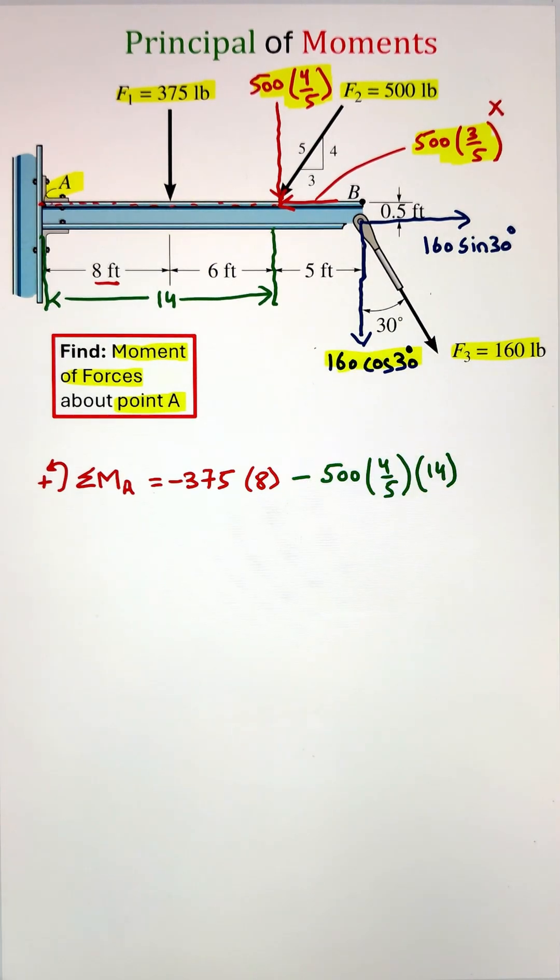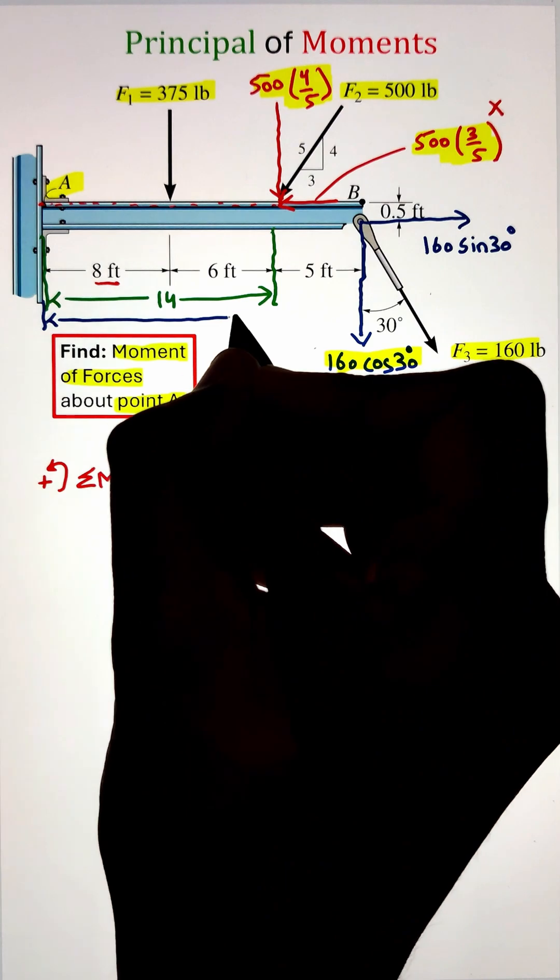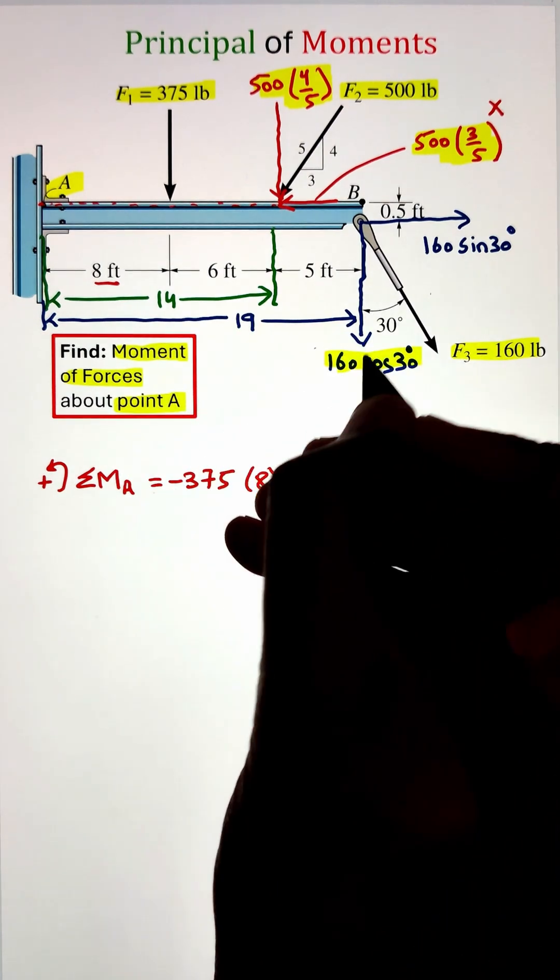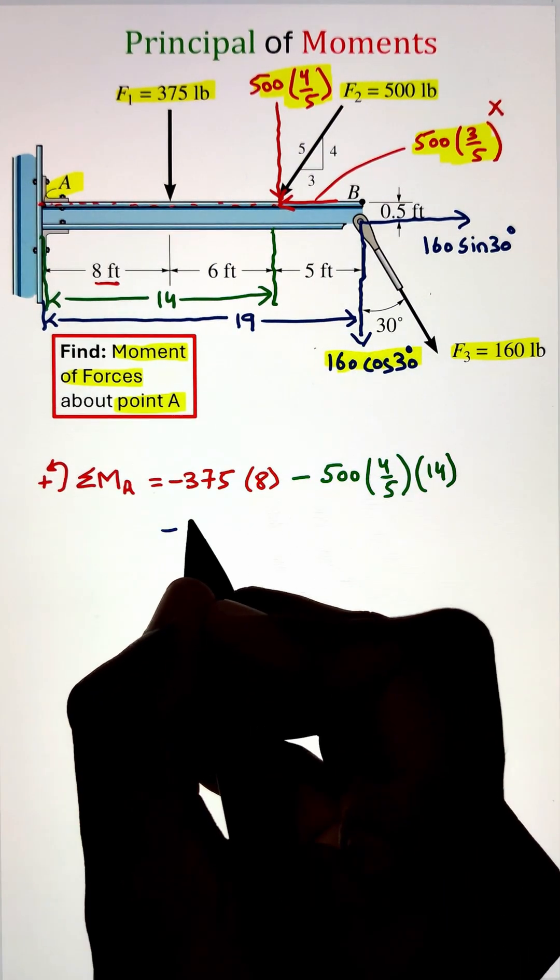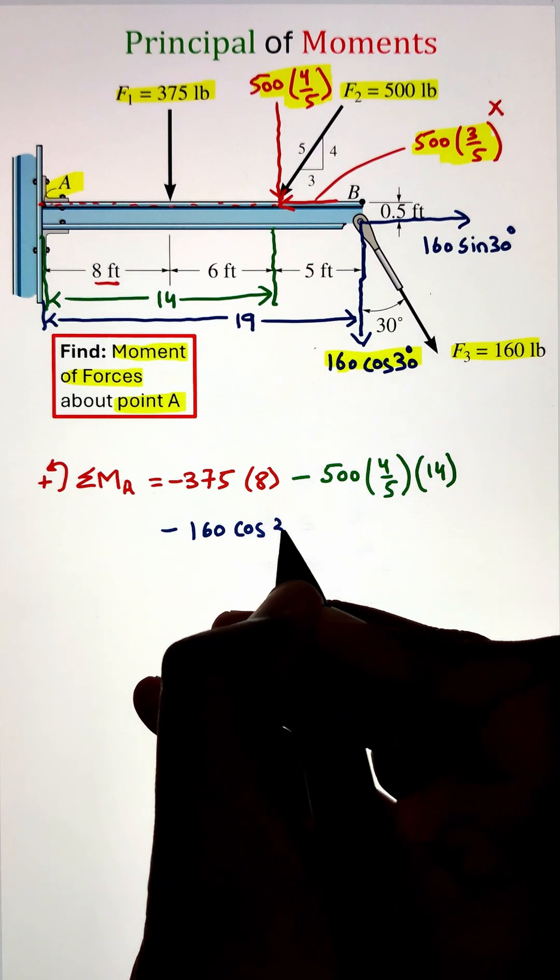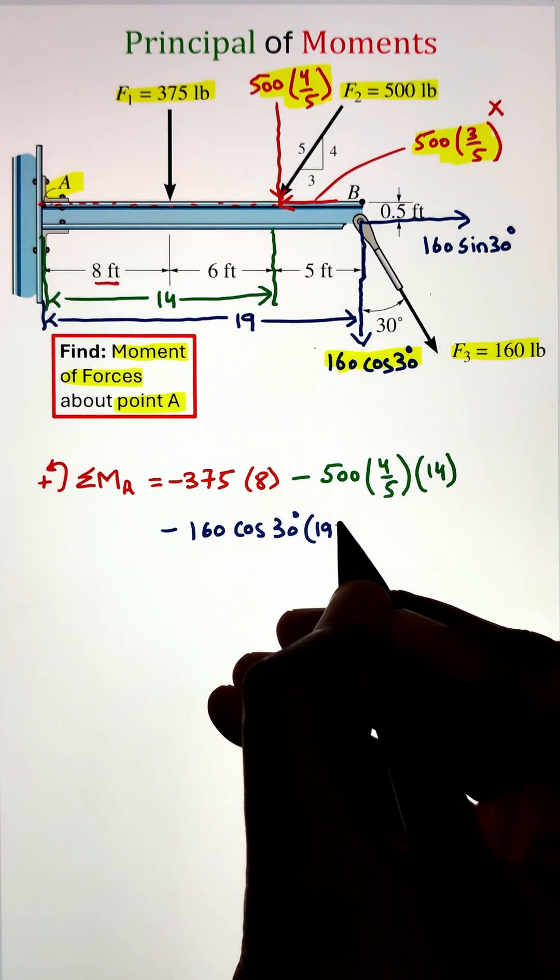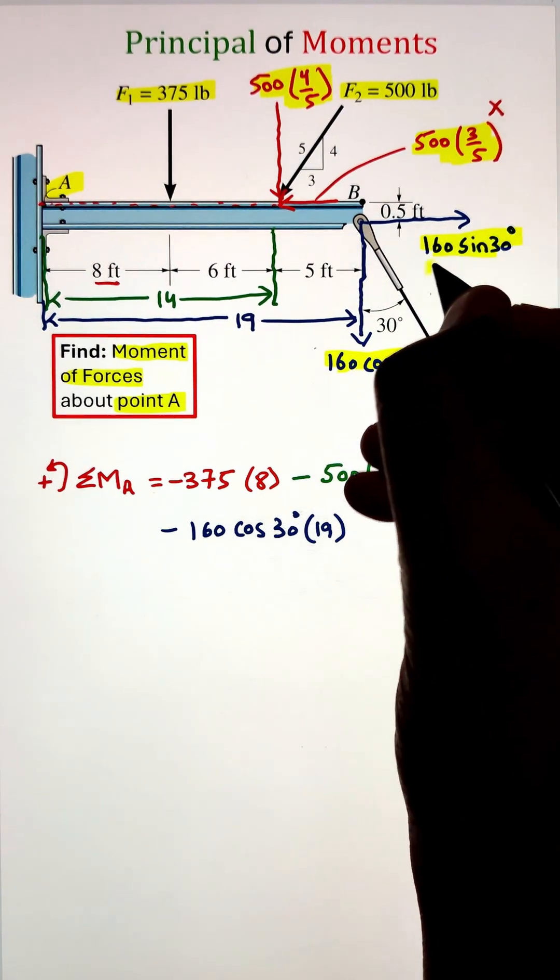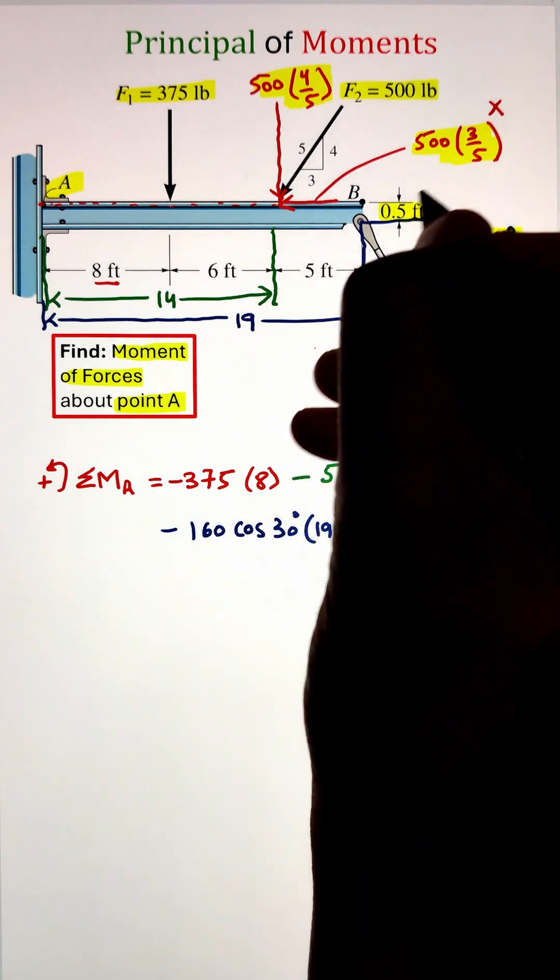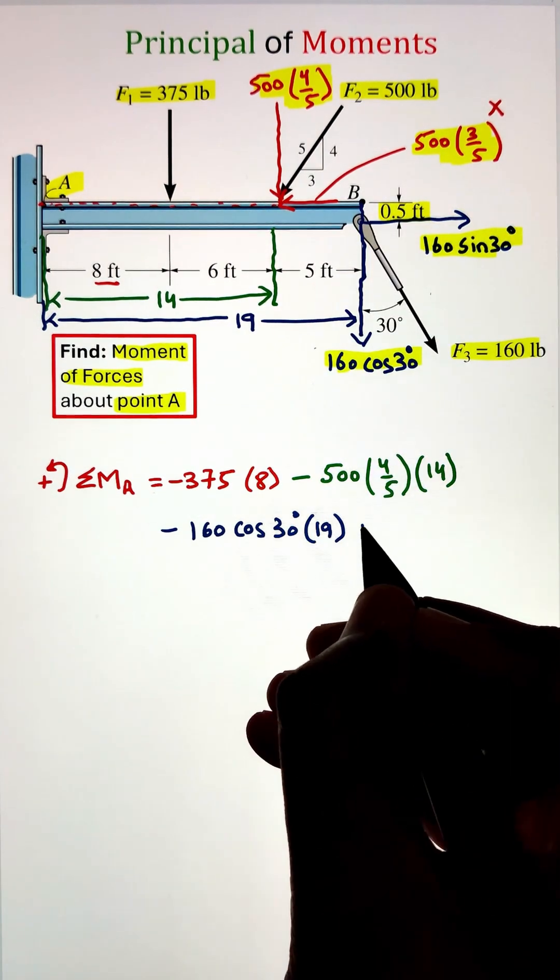Once we have the components, let's figure out the moment. The moment created by the vertical component will be in the clockwise direction, having a moment arm of 19 feet. However, the horizontal component of force F3 is going to make a counterclockwise moment. In this case, the moment arm is 0.5 feet.